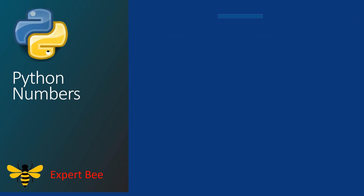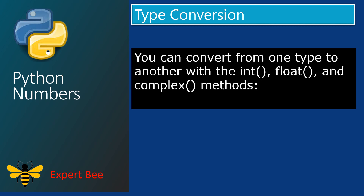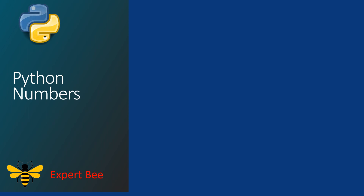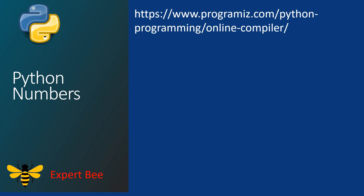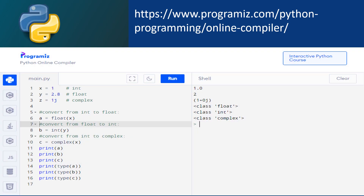Now let us discuss type conversion. You can convert from one data type to another with the int, float, and complex methods. If you want to convert to integer, use the int function. If you want to convert to float, use the float function. If you want to convert to complex, use the complex function. Keep in mind that you cannot convert complex data type into either integer or float. In the main.py section, type: x is equal to 1, y is equal to 2.8, z is equal to 1j. Here x is an integer, y is a float, and z is a complex number having 1 as the imaginary part.